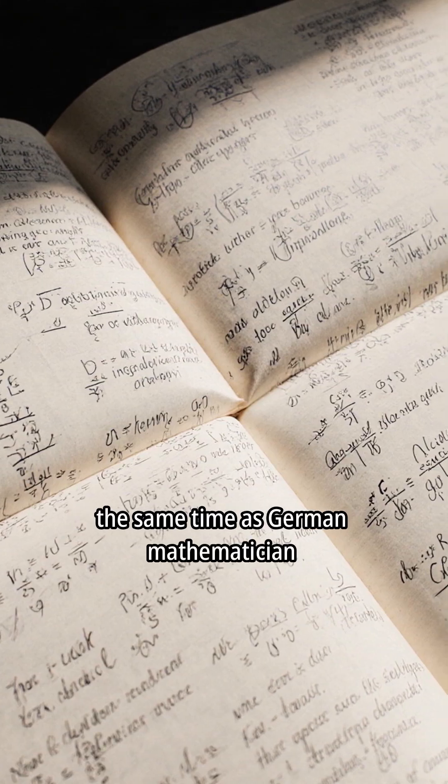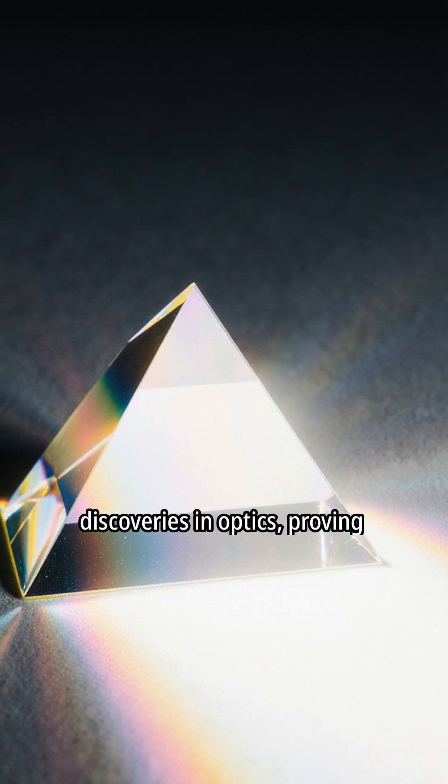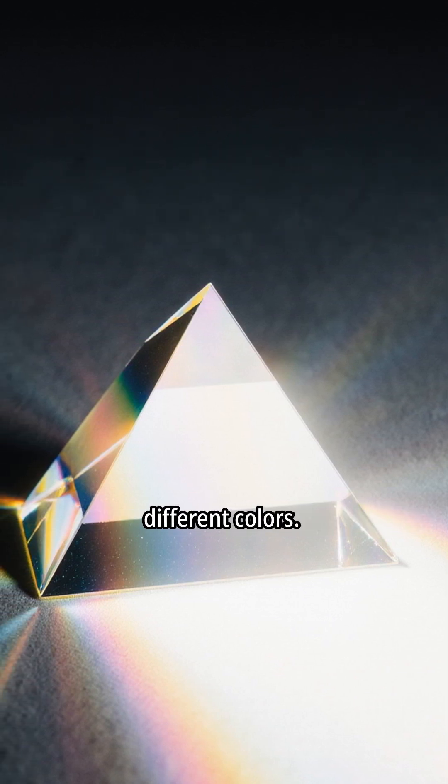He invented calculus around the same time as German mathematician Gottfried Leibniz. Newton also made groundbreaking discoveries in optics, proving that white light is made of different colors.